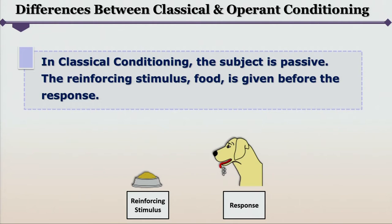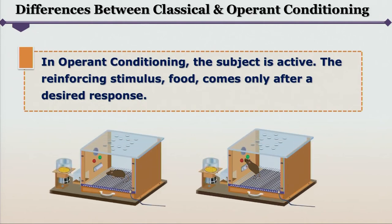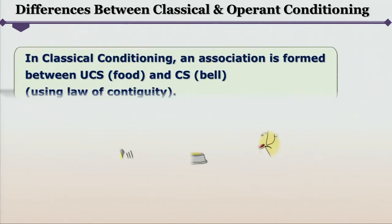In classical conditioning, the subject is passive. The reinforcing stimulus — food — is given before the response. It doesn't come as a reward; it is given irrespective of the response by the organism. Whereas in operant conditioning, the subject is active, and the reinforcing stimulus — food — comes only after a desired response, in the form of reinforcement.